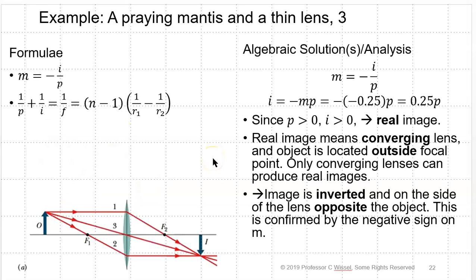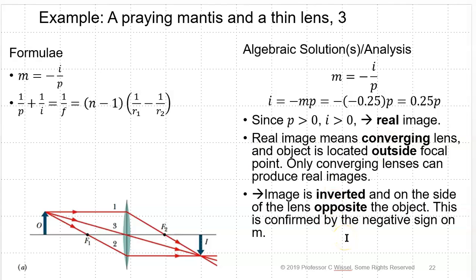M equals minus 0.25, N equals 1.65, P equals 20 centimeters. Using M equals minus I over P, I equals minus M times P, which ends up being 0.25P. Since P is greater than zero, I is greater than zero — it's a real image. This means there's a converging lens and the object is located outside the focal point. Because it's real and it's only one lens, the image is going to be inverted and on the side of the lens opposite the object. This is confirmed by the negative sign on M, and also by the ray diagram where the object is outside the focal point.